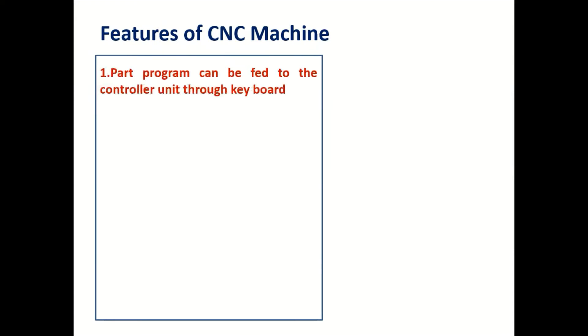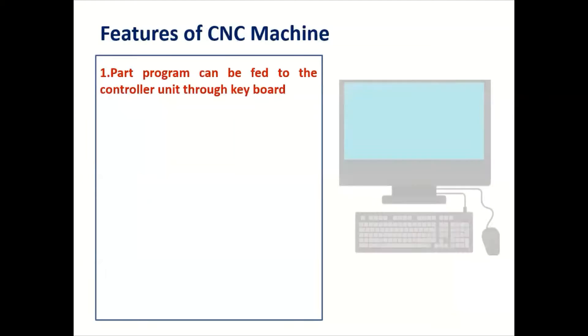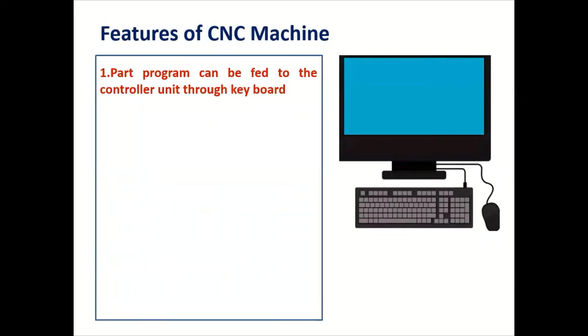Now the features of CNC machine. The first feature is that the part program can be fed to the control unit through the keyboard. You can see the keyboard is directly on the machine also, through which we can write the program and feed it to the control unit — that is the machine control unit.